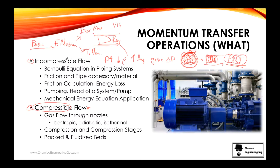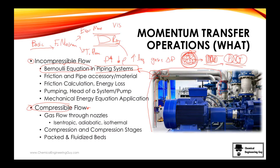For incompressible flow, you're going to start with the Bernoulli equation applied to many systems, but the most common one in chemical engineering is piping systems — how to move liquid through pipes using a pump, a pipe, and accessories. We study why friction occurs in pipes or accessories, which materials are better for certain chemicals or operations, and how to calculate friction losses. Friction losses are very important because they mean energy loss — we need higher pressures, which means electricity and ultimately money.